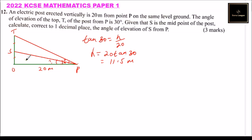Now, once you get that, we can say OS is equal to 11.5 divided by 2, and you will be able to get 5.8, around 5.8 meters. Now that we have this is 5.8, we can now get the angle.